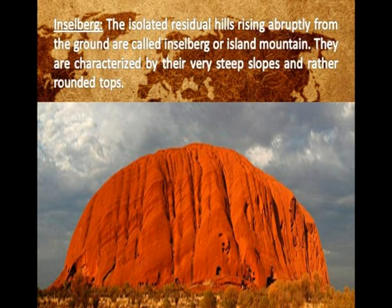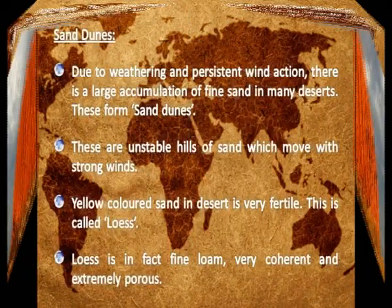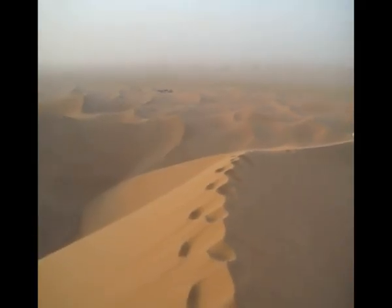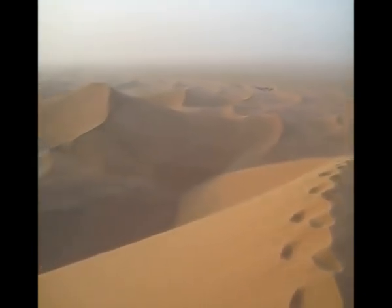Sand dunes: due to weathering and persistent wind action, there is a large accumulation of fine sand in many deserts, forming sand dunes. These are unstable hills of sand which move with strong winds. Yellow-colored sand found in deserts is very fertile and is called loess. Loess is in fact fine, low, very coherent, and extremely porous.